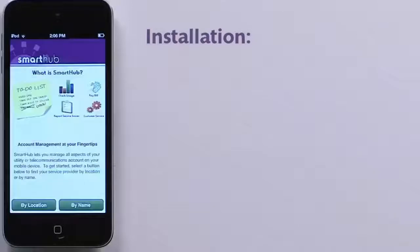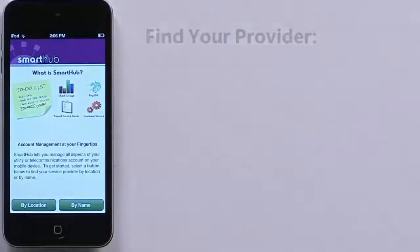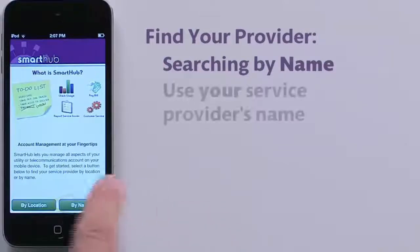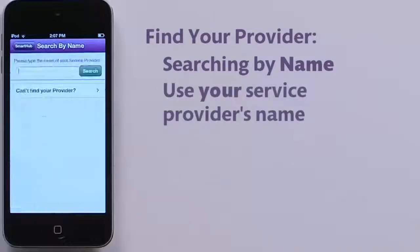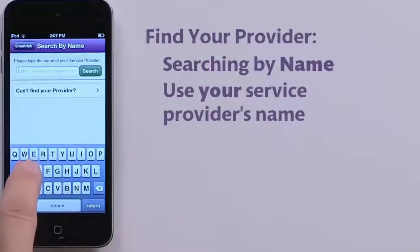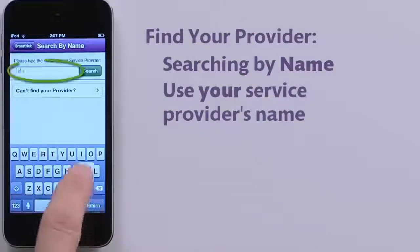Find your service provider by name or location when GPS is enabled. I'll search by name using SmartHub as an example, but you'll need to enter your provider's name here.